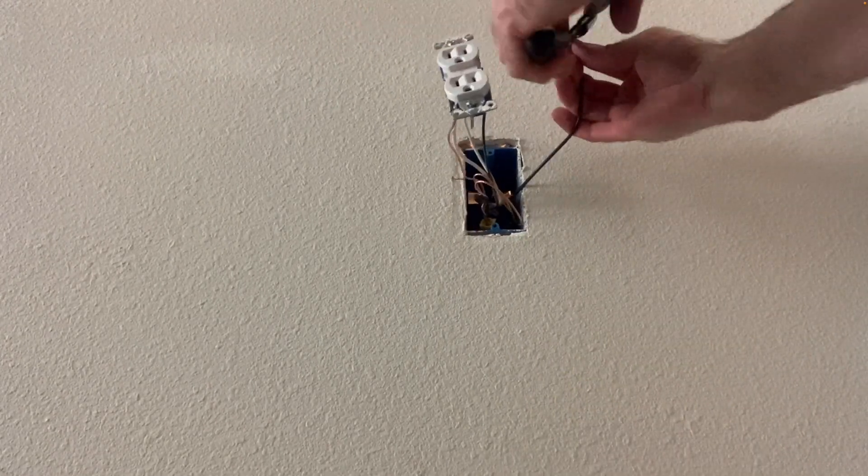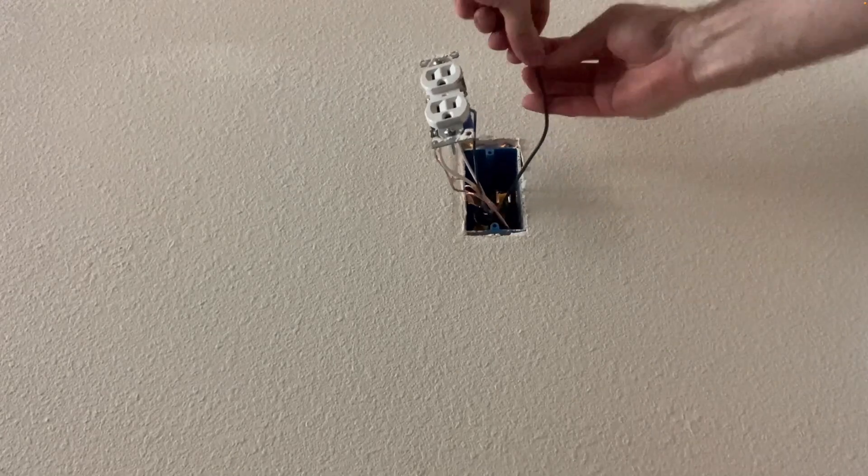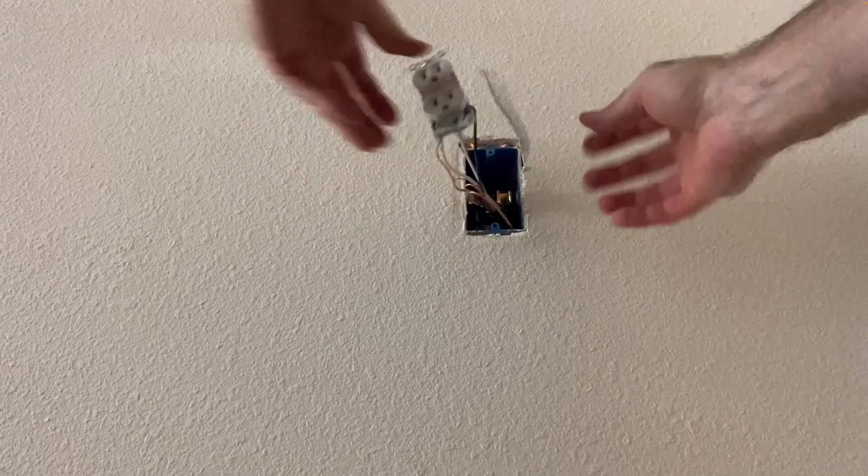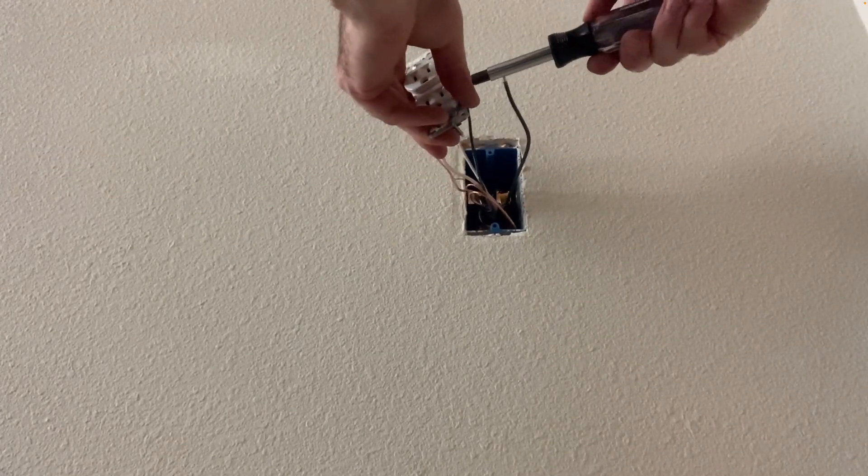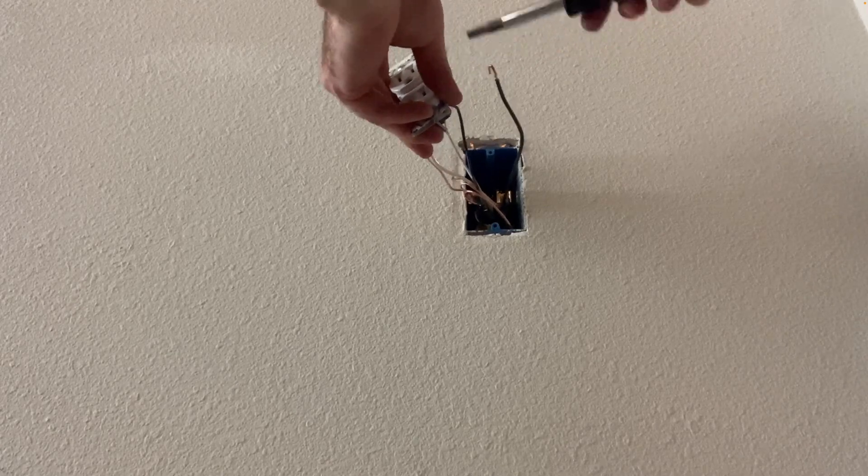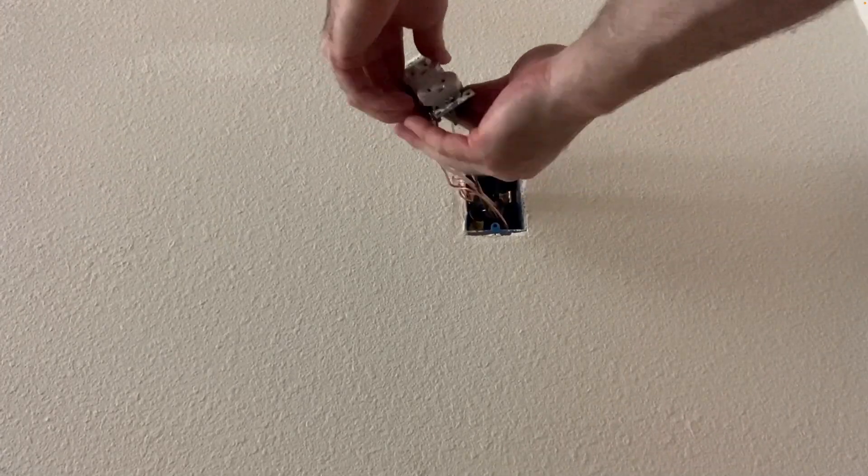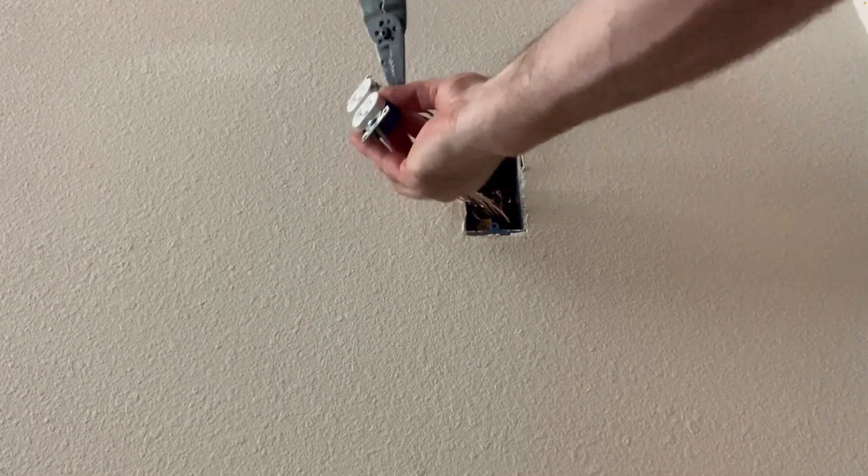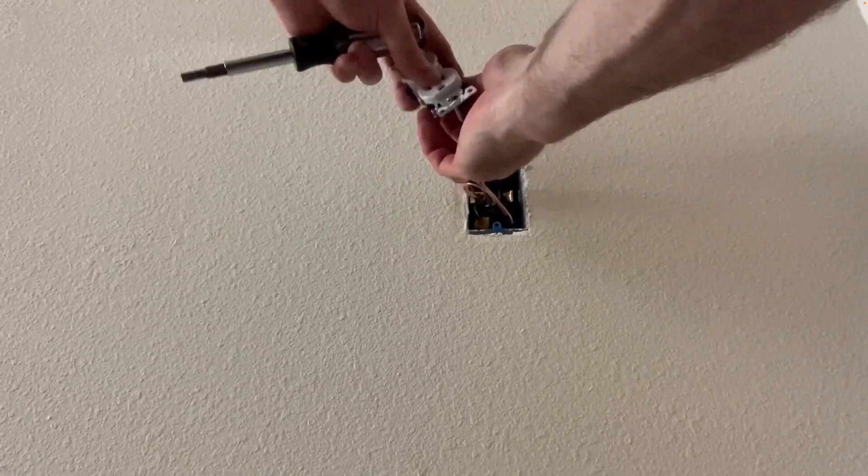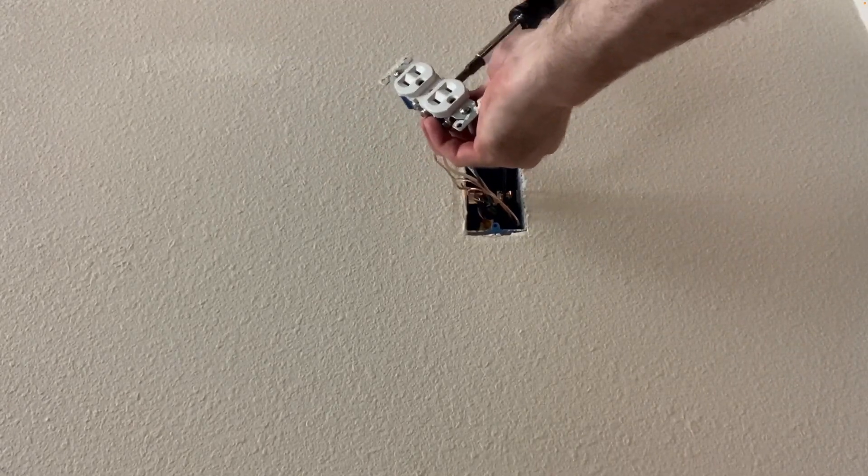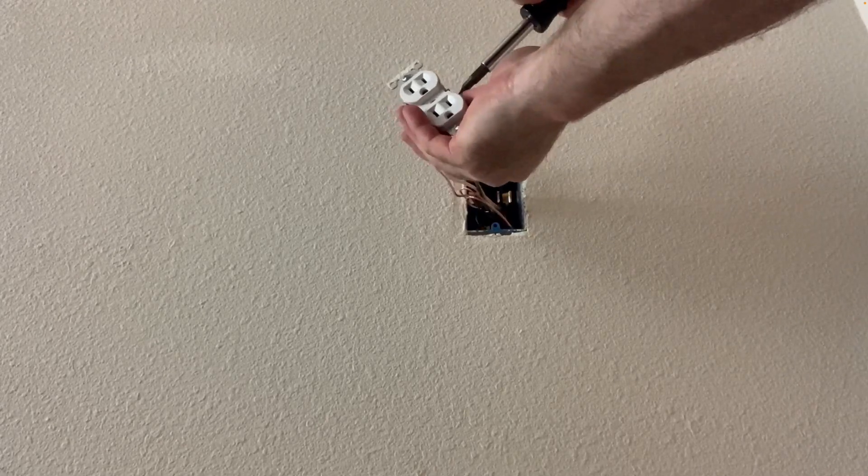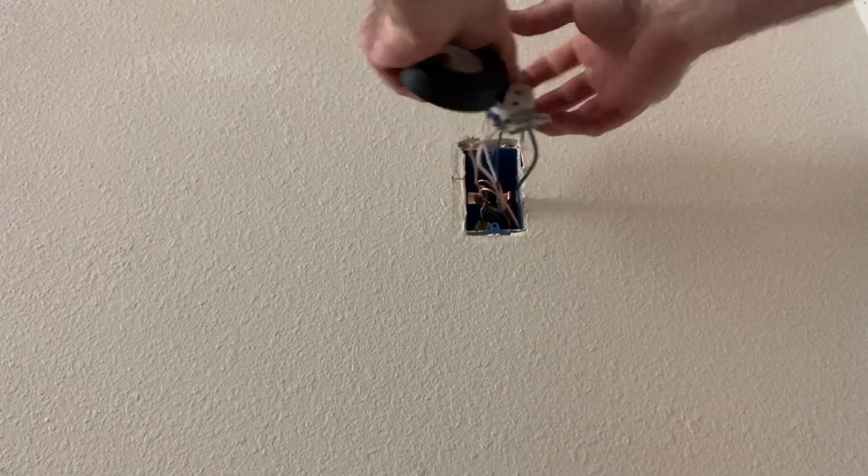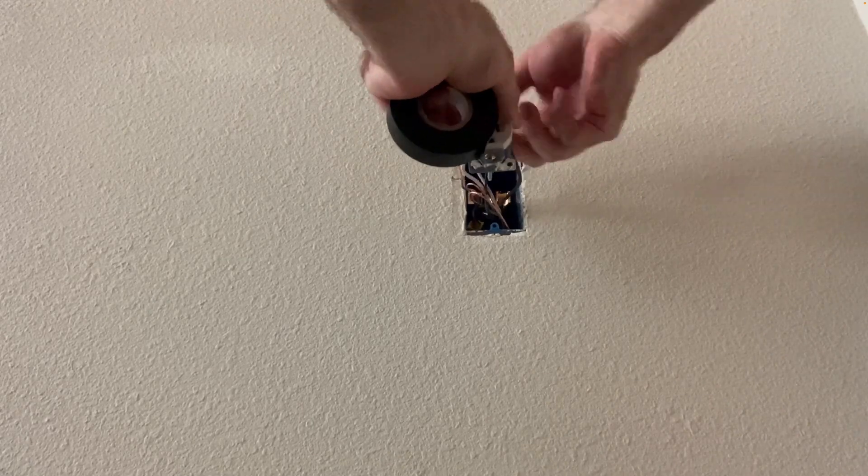Prepping our hot wire, again using that little loop trick. Brass to black, bright to white—that's one way to remember it. And then again for safety, we're going to wrap some electrical tape around all of our screw terminals.